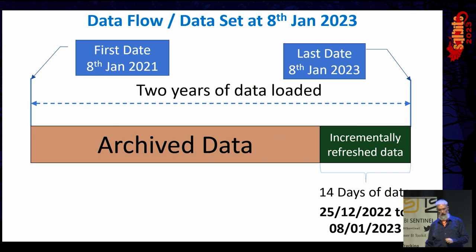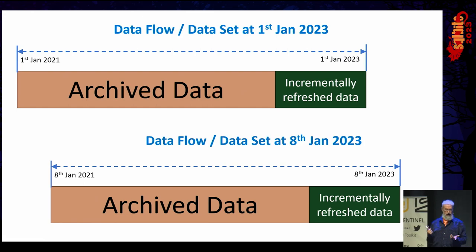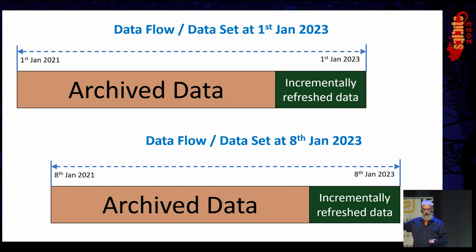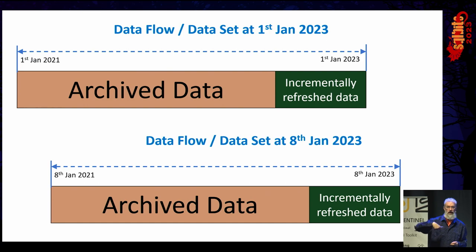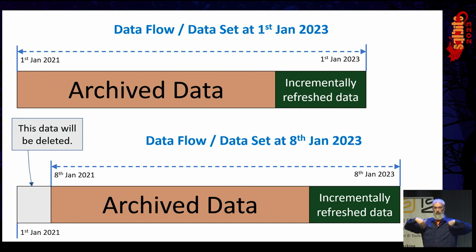We still have two years' worth of data, but some things have happened. If you look at the diagram and compare the 1st of January to the 8th of January, the incremental refresh window has moved on — it rolls forward every single day. So data on the 18th of December 2022 is no longer being refreshed. What's even worse is that any data between the 1st and 7th of January 2021 is gone — deleted, removed, you can no longer access it. The rolling window is moving forward a day at a time.